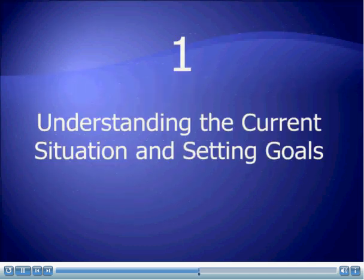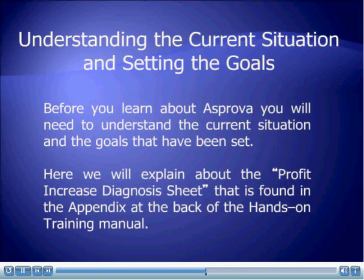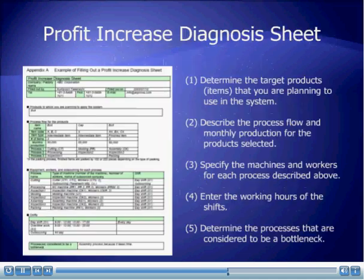Section 1: Understanding the current situation and setting goals. Before you learn about Asprover, you will need to understand the current situation and the goals that have been set. Here, we will explain the Profit Increase Diagnosis Sheet, which is found in Appendix A at the back of the Hands-On Training Manual.